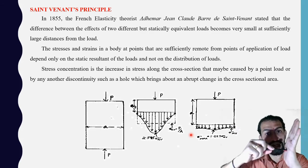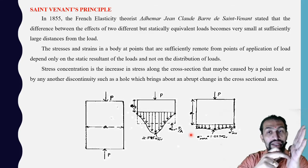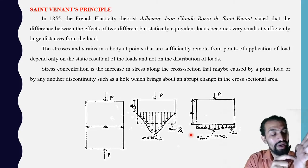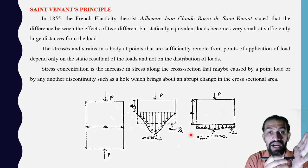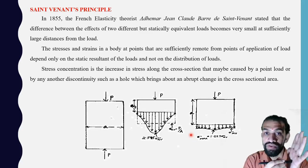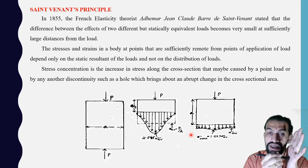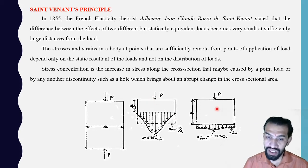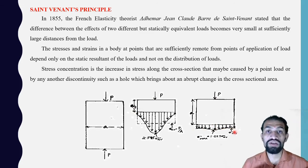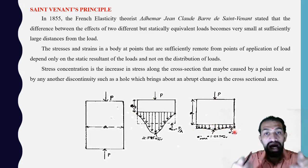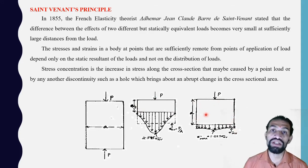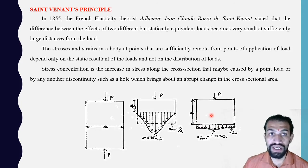Simply put, if a point load is acting on a particular surface, the load acts at an exactly concentrated point. The surface area where it acts does not get uniform stresses. Stress concentration is the increase in stress along the cross section — as the cross section increases, the stress also increases, because stress distribution follows the particular loading. This is Saint Venant's Principle.